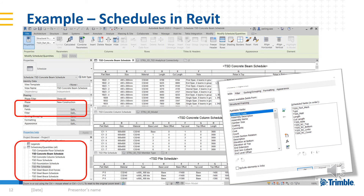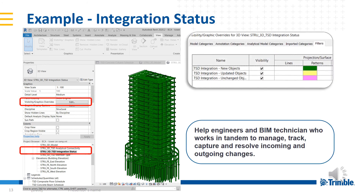You can easily create schedules for structural elements and customize the tables within Revit. Integration status is readily available in 3D views. Users can use the default colors to indicate different statuses or change them. This helps engineers and BIM technicians to manage change practically and efficiently.